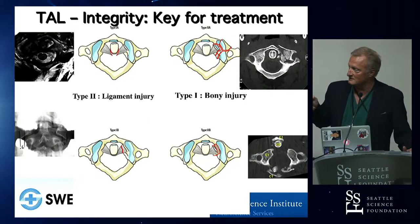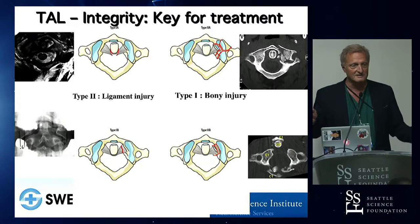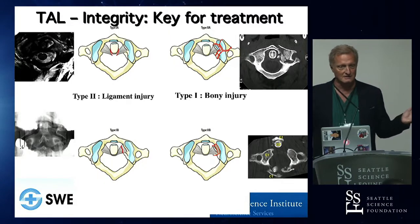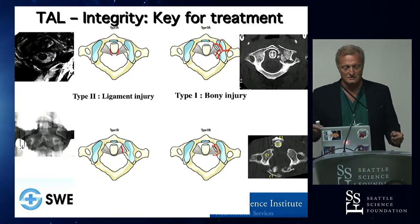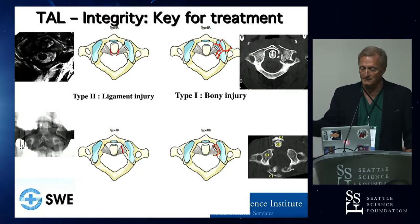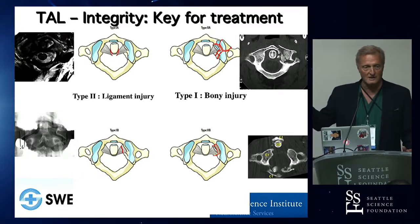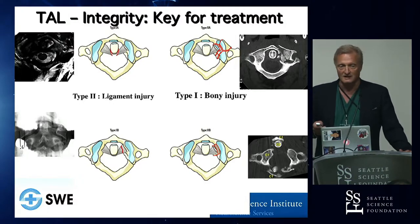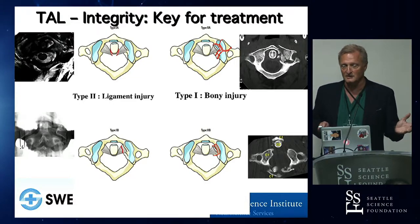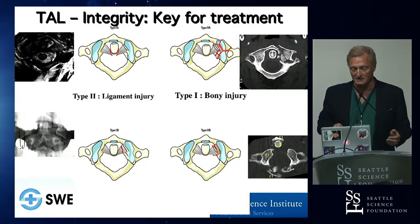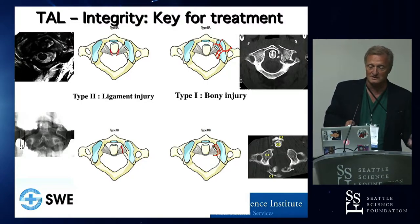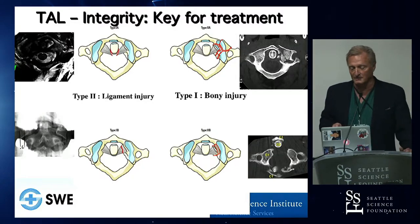We need to answer one basic question when looking at an odontoid fracture: the integrity of the TAL. The Barrow Institute did a great series of studies with Curtis Dickman about TAL integrity. If you have a ligamentous TAL injury, regardless of your odontoid fracture, that's probably a surgical indication. If there's a true bony component, you have a chance with a halo to help it heal. But the second the TAL is torn or impaired, you have a problem.